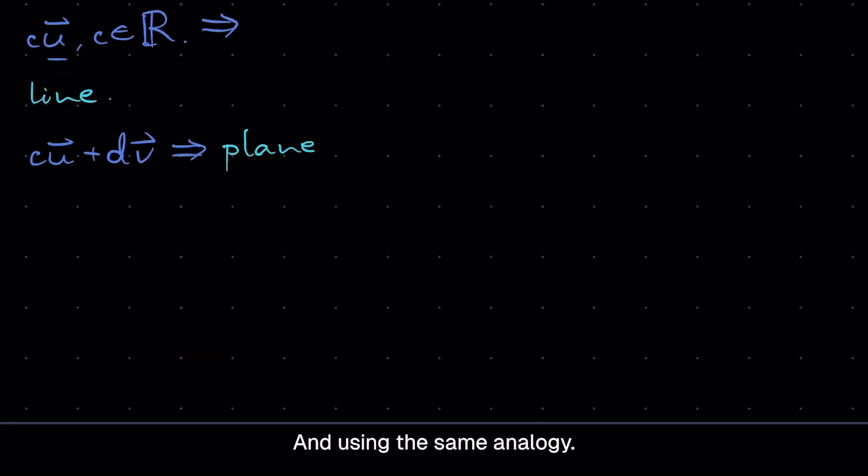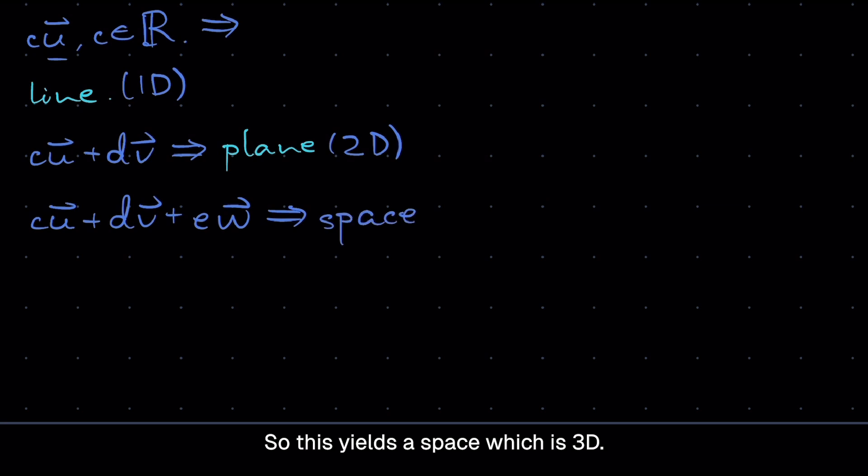And using the same analogy, what about CU plus DV plus, let's add another vector, EW. E is not the Euler's number. This actually yields, so a line is 1D, a plane is 2D, so this yields a space, which is 3D. Fantastic. So that's it, basically. These are the geometric interpretations of linear combinations. And the vectors have to be linearly independent, so they must be pointing in different directions.